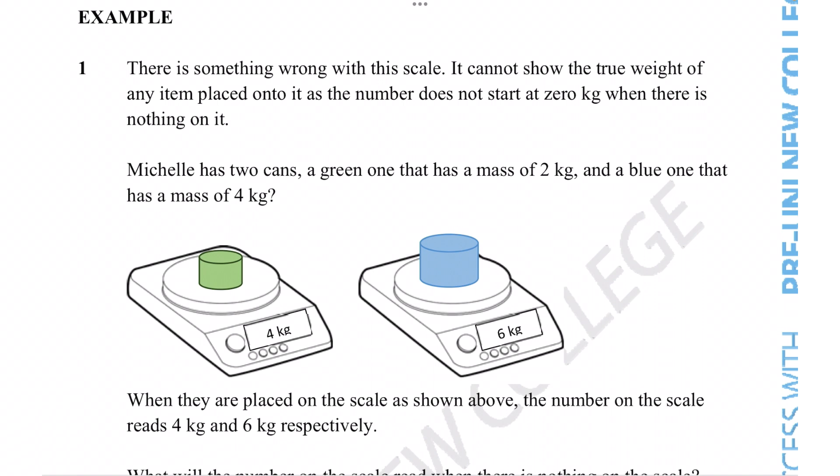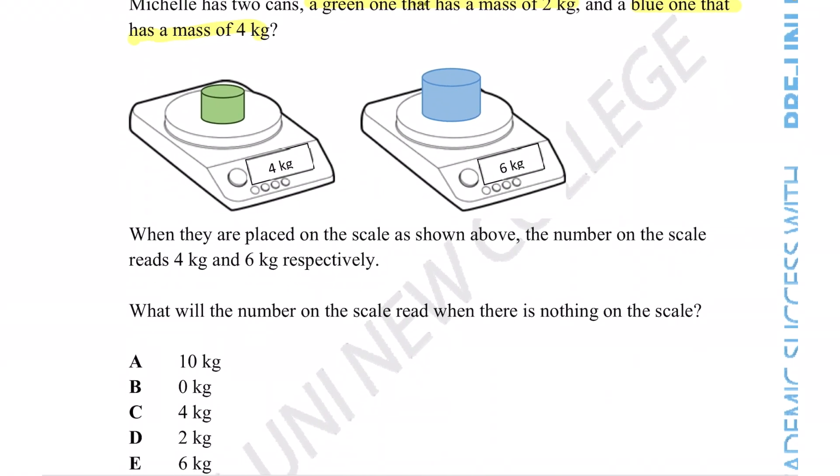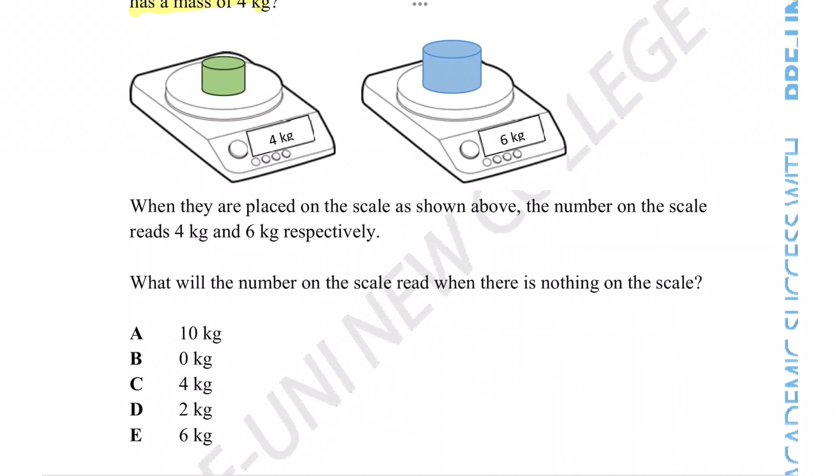There is something wrong with the scale, it cannot show the true weight of any item placed onto it as the number does not start at zero kilograms when there is nothing on it. Michelle has two cans, a green one that has a mass of 2 kg, and a blue one that has a mass of 4 kg.